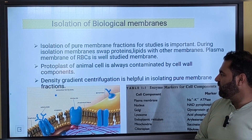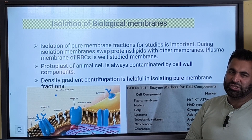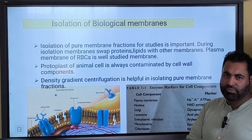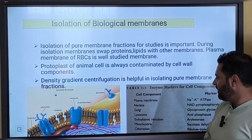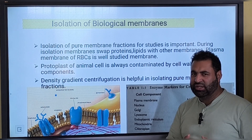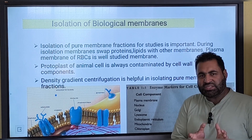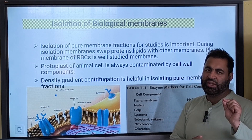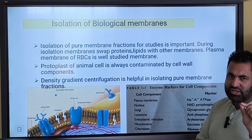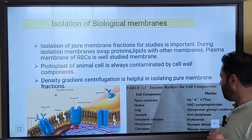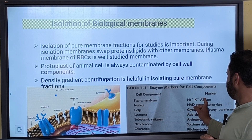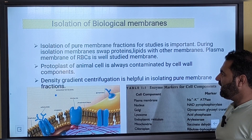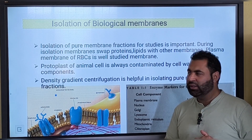Density gradient centrifugation then came into use, and by this technique we are able to isolate different plasma membrane components and study them. Once we isolate different biological membranes, we can assess the purity of a membrane by different enzymes, because every membrane has a specific enzyme marker. For example, the plasma membrane has sodium-potassium ATPase, and lysosomes have acid phosphatase. So these enzyme markers help us in confirming the purity of the membrane.